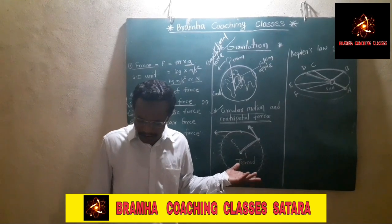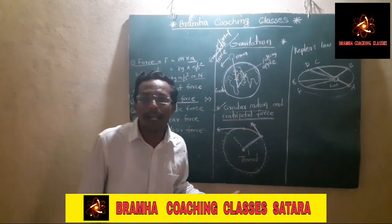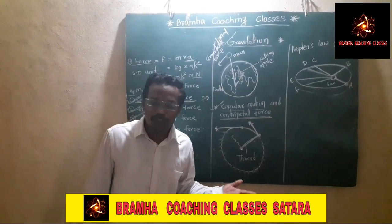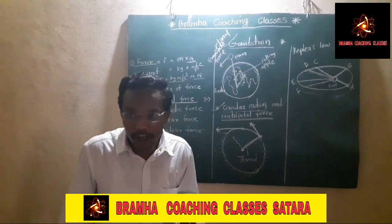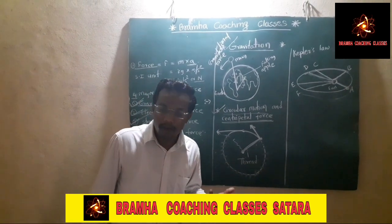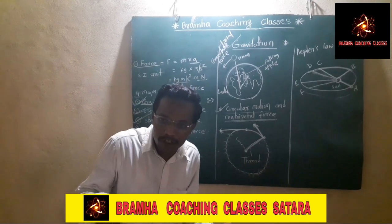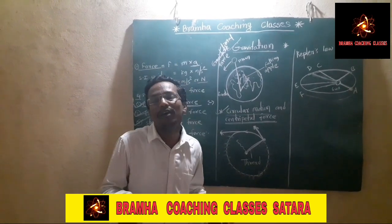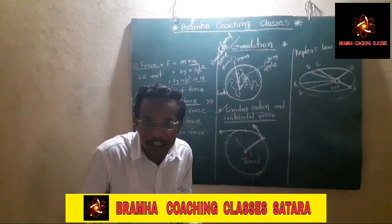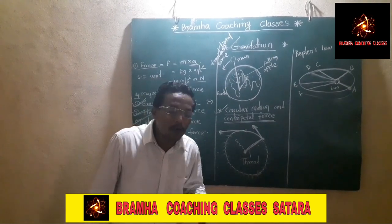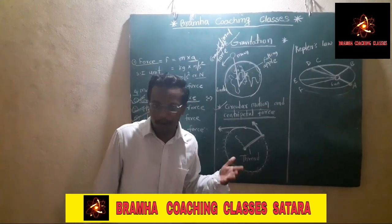Another scientist is Copernicus — the first man who stated that planets are not stationary; they are moving continuously. The sun is at the centre of the galaxy, and all the planets, including the earth, are rotating around the sun. This is the law given by Copernicus.